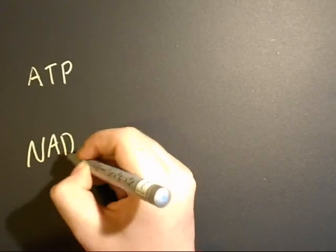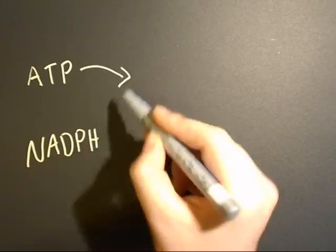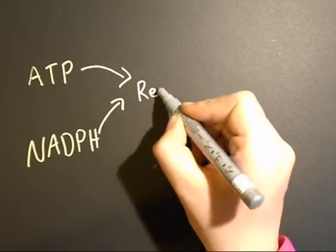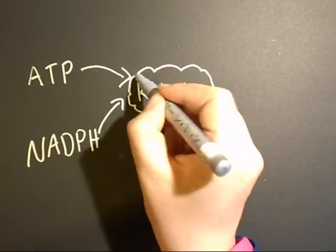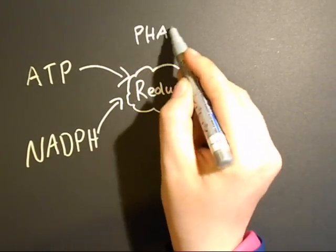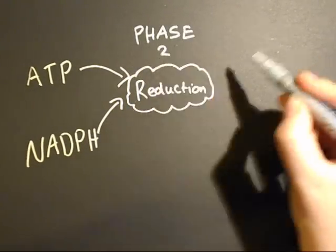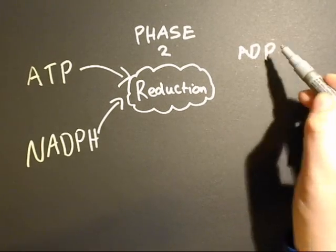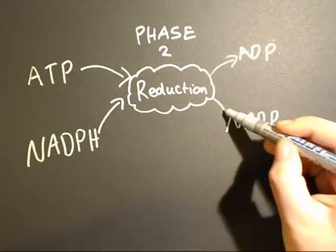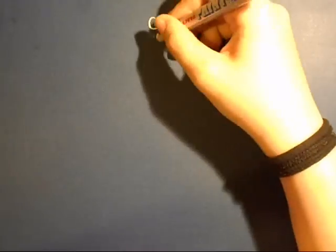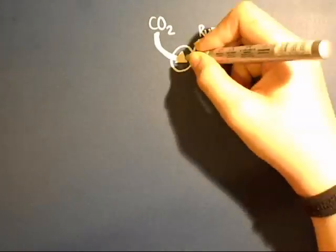NADPH — both go in and they both react. This is called reduction and it's in phase two. NADP and ATP result.